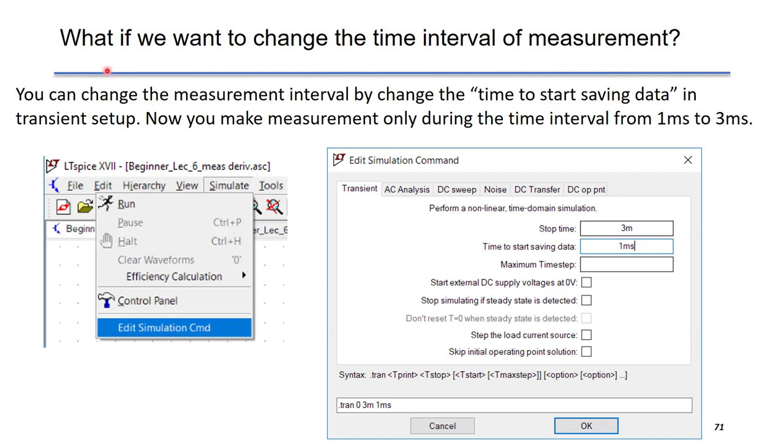So what if we want to change the time interval of the measurement? One way is to change the time to start saving data in the transient setup. We can change the time to one millisecond so that you can make measurement only during the time interval from one millisecond to the stop time three milliseconds.